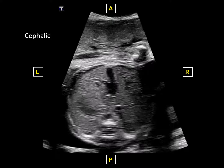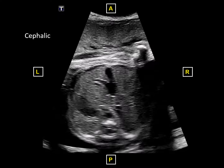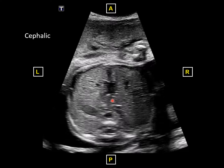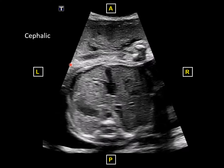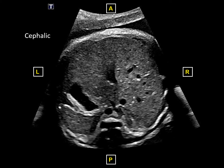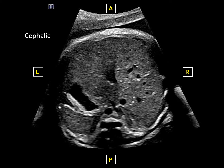In this transverse abdominal view of a fetus in cephalic presentation, at the beginning of the sweep you can see the portal sinus where the umbilical vein joins the hepatic veins and IVC. The stomach is here on the left, the spleen is behind the stomach. As we sweep up into the chest the cardiac mass has its apex pointed to the left — this is levocardia. When you freeze the image you can clearly see the abdominal contents: liver on the right, IVC up inside the liver on the right off the spine, aorta just to the left of midline on the spine, stomach and spleen behind the stomach.